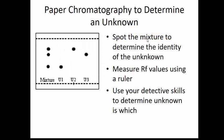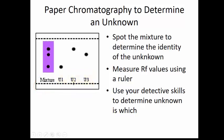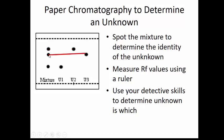RF values can also be used to determine unknowns. Given a mixture and several unknowns, compare the RF values of the spots in the mixture to those of the unknowns to identify which is which. For example, the top spot in the mixture corresponds to unknown two, the second spot to unknown three, and the bottom spot to unknown one — requiring some detective work to match them up.